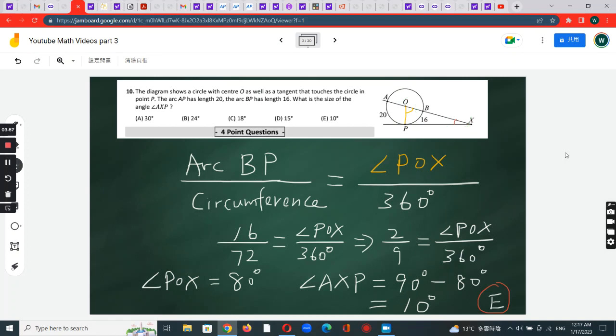So how do we calculate this angle? The ratio of angle POX to 360 degrees, which is the whole angle, is the same as the ratio of arc BP to the entire circumference.